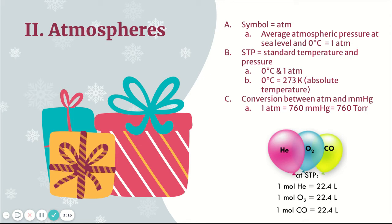The conversion between atm and millimeters of mercury — remember, torr and millimeters of mercury are one-to-one. If atm is one, then millimeters of mercury is 760. So 1 atm = 760 mmHg. That's the conversion factor you'll use, and I'll show you examples of those in your notebook.